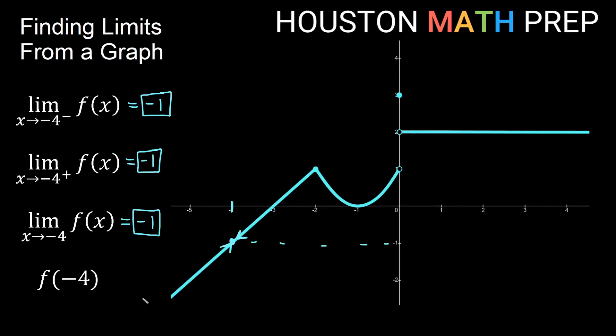What is the actual y value on the function at x equals negative 4? When x is exactly negative 4, the y value we get is negative 1.